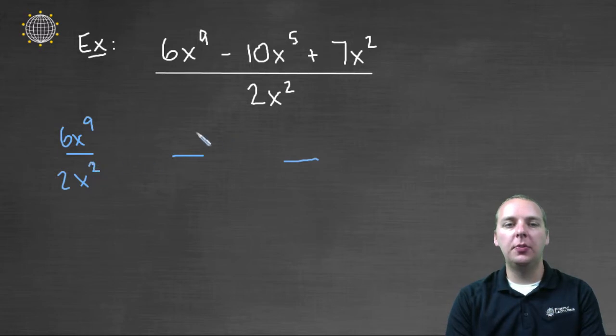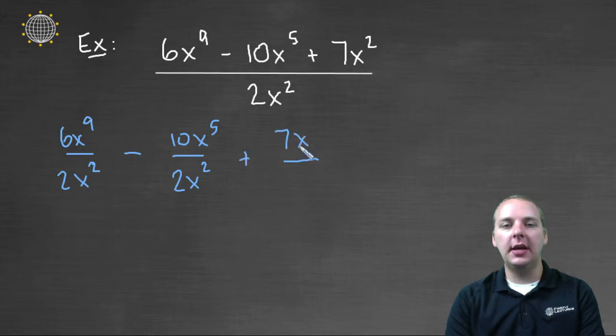The second term will be ten x to the fifth, over two x squared. And this will be subtracted, since this is a minus. And then lastly, we'd have plus seven x squared, divided by two x squared.